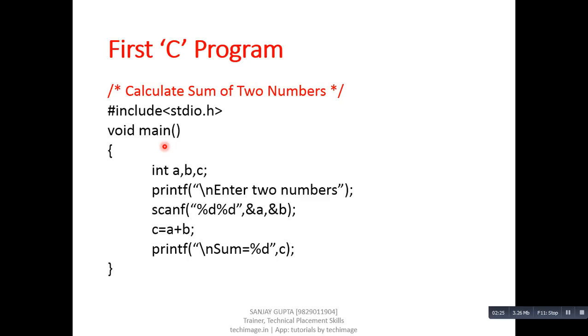Because execution of every C program begins with main. These are curly braces. These curly braces are used to design the scope of main function. Now, int a comma b comma c then semicolon. Here, int is known as a data type, and a, b, c are known as variables, and semicolon is used to represent termination of a statement.